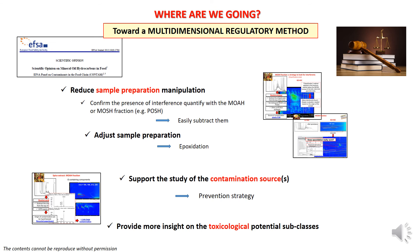In conclusion, why should we move towards this direction? We can reduce sample preparation manipulation, reducing the probability of cross-contamination. We can easily subtract interferences such as POSH from the MOSH fraction, and tune sample preparation once we can clearly highlight which interferences remain. Thanks to the TOF-MS capability for detecting markers, we can support the study of contamination sources and prevention strategies for avoiding contamination in food, and provide additional insight for a detailed toxicological evaluation of the MOSH and MOAH fractions.